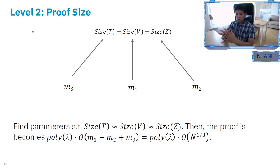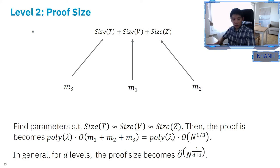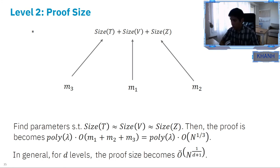The verifier will send c2 then we do the rejection sampling so we write z is equal to y plus s1 c1, s2 c1 up to s_m1 c1 times c2 then do the rejection sampling then we send z. The proof size becomes the size of T plus the size of v plus the size of z. If one figures out all the dimensions then each of them corresponds to different m_i. If we find parameters such that the sizes of T, v, and z are similar then the proof becomes basically poly of lambda times big O of n to the one-third. In the paper we generalize this approach to many levels so if we have d levels then the proof size becomes asymptotically essentially n to the one over d plus one. Also it is worth mentioning that d has to be a constant because otherwise the extractor for soundness becomes inefficient. Unless d is a constant the runtime of the extractor is not polynomial time.